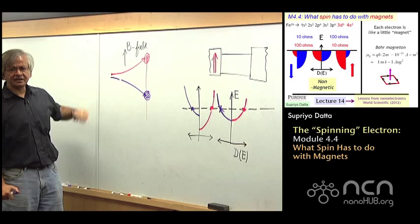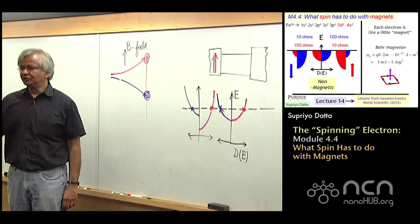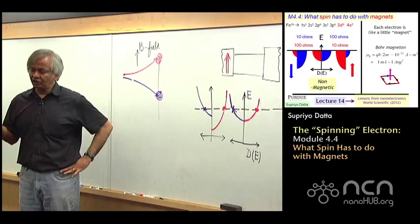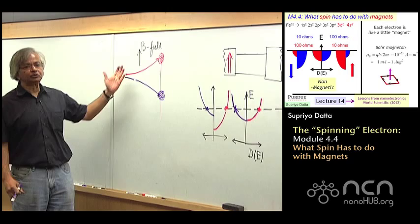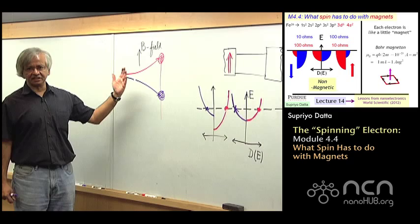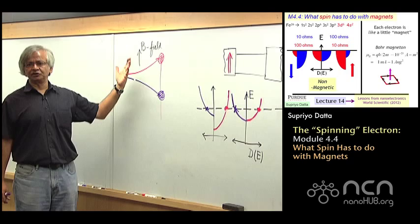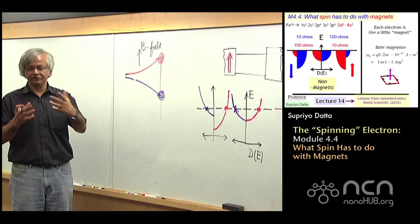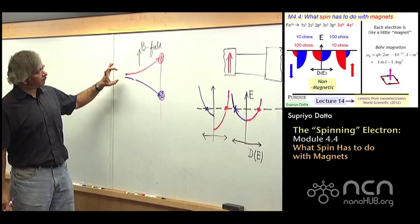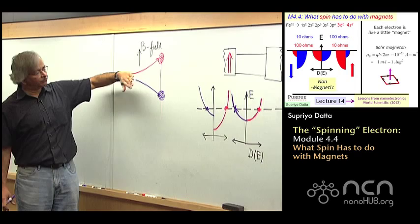When people did this experiment with electrons, they found that half the electrons bent this way, leaving a spot somewhere up here on the screen, and the other half bent this way, leaving a spot somewhere here. Actually, these experiments are done not with electrons but with neutral atoms, because charged particles have large effects due to electric fields. The original experiment was done with silver atoms by Stern and Gerlach. In a few years, people did it with hydrogen atoms also, where it's the simplest thing—just one electron and a proton.